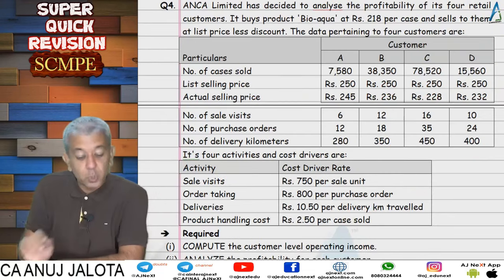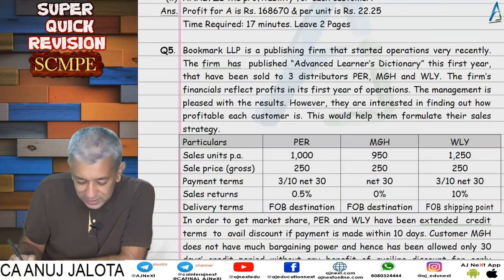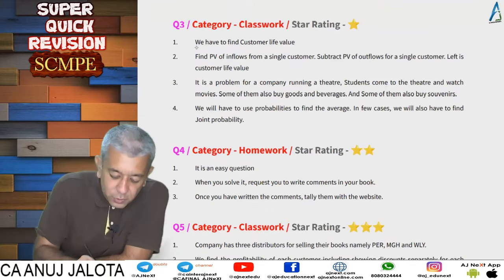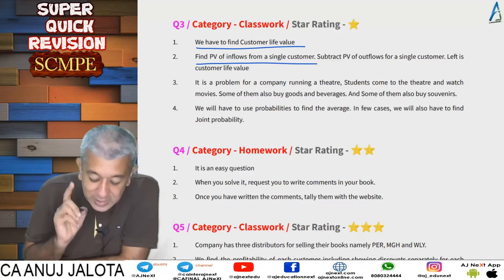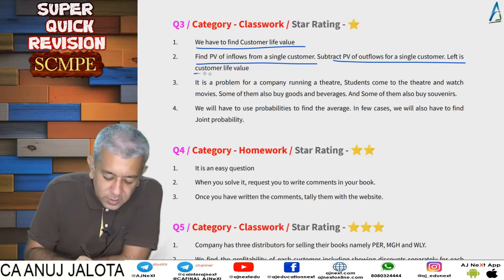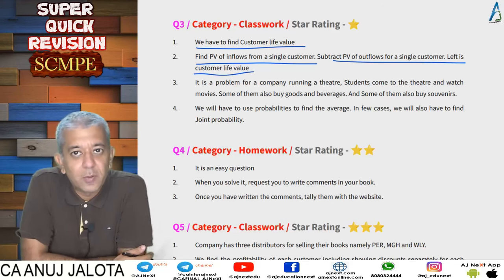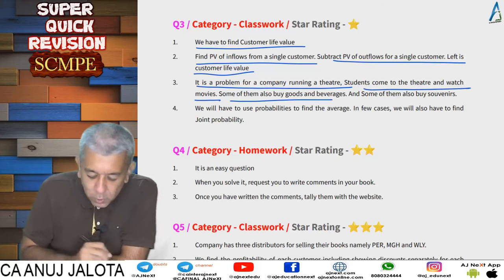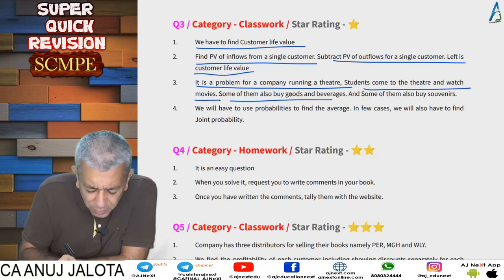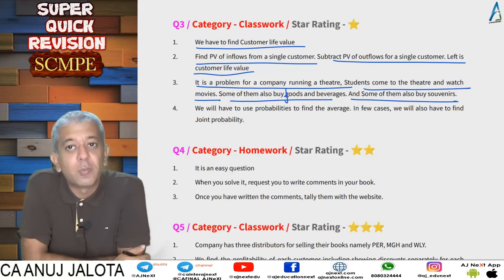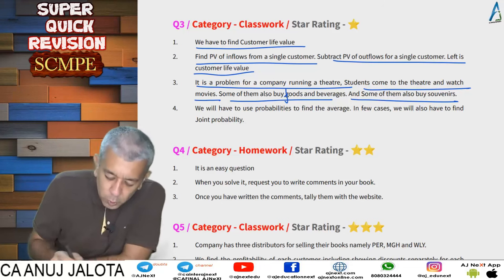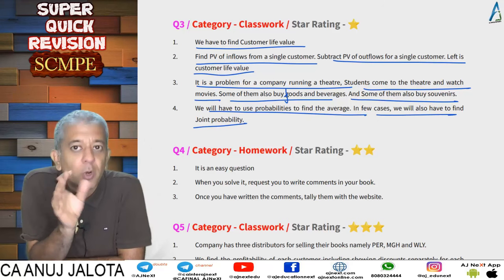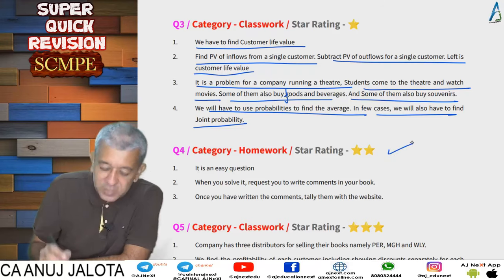Once you get all totals, that gives you the PV of inflows. Subtract ₹5000 spent per student to arrive at customer life value. The question was quite simple. To summarize question three: find PV of inflows from a single customer, subtract PV of outflows for that single customer — the difference is the customer life value. Joint probability means the probability of two events both occurring.